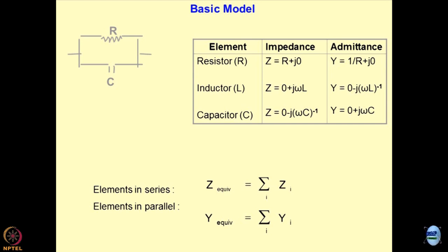Impedance is the resistance and admittance is the conductance — inverse of the impedance. When you deal with resistors, the impedance is R; with inductors, it is jωL; and with capacitors, it is −1/(jωC). These components can be fitted to describe the state of the soils. To find total impedance, you sum up the resistances; for parallel combinations, you sum up all the admittances.